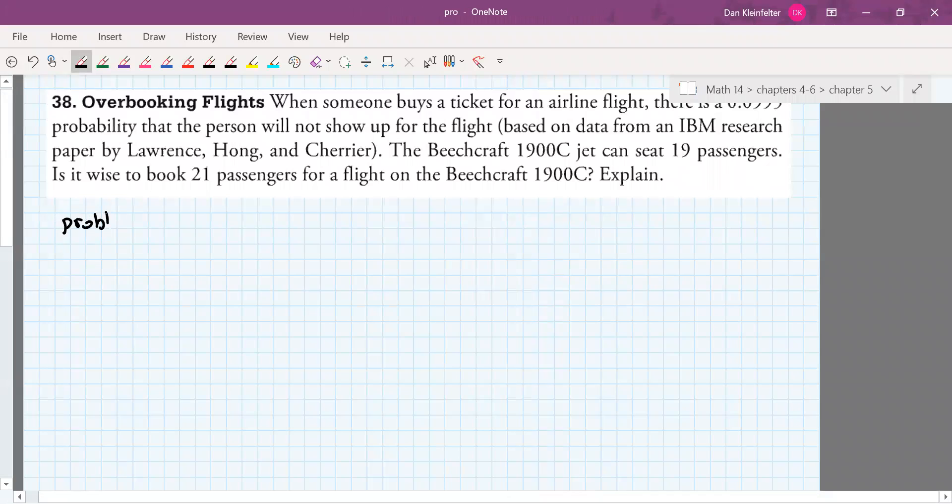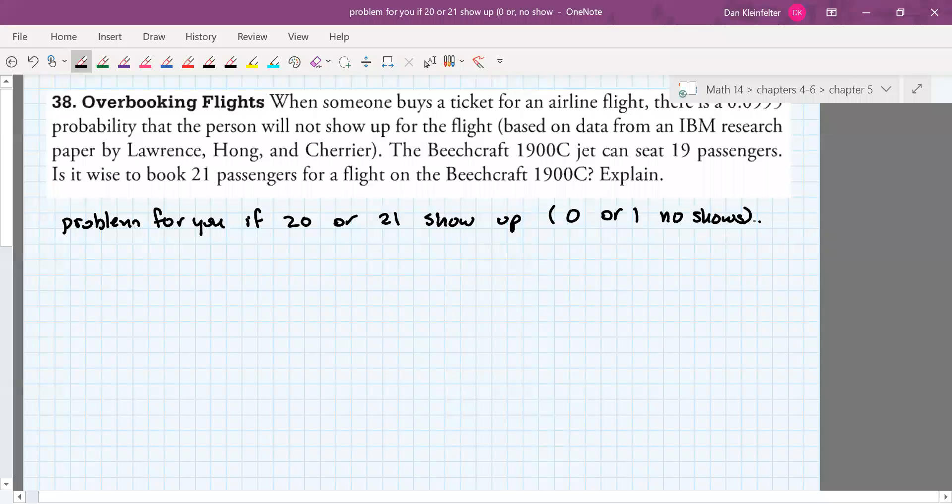So this is going to be a problem for you if 20 or 21 people show up. If 19 people show up, it's fine. You've got a full plane. But if 20 or 21 show up. If 20 or 21 show up, that means that there is either zero or one no-shows. So we want to know what is the probability of having no no-shows or one no-shows. So if you book 21 passengers and everybody shows up or one person no-shows, that's still going to be a problem for you. And so we want to know what is the probability of this occurring.